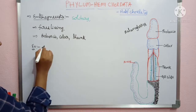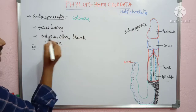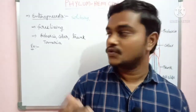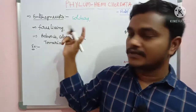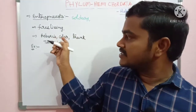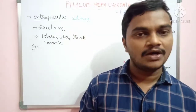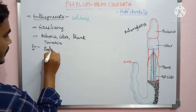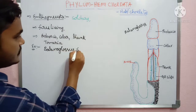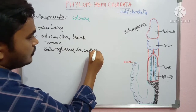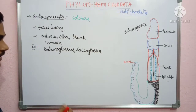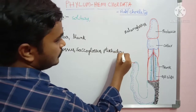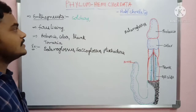In Enteropneusta, there is a larval stage in the life cycle — that is the tornaria larva. Examples of Enteropneusta include Balanoglossus, Saccoglossus, and Ptychodera. These are the key examples of class Enteropneusta.